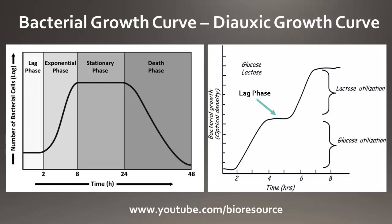When we inoculate bacterial stock into a media, initially the growth proceeds very slowly, so this stage is called the lag phase. In the lag phase, bacteria get adapted to the new media, so that's why there is a delay in growth.